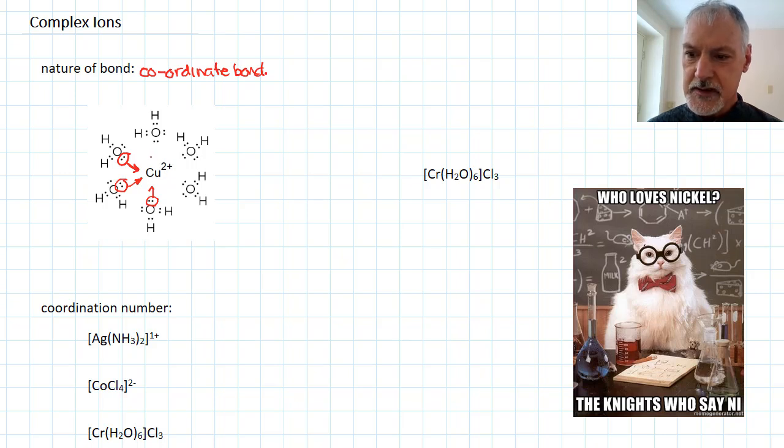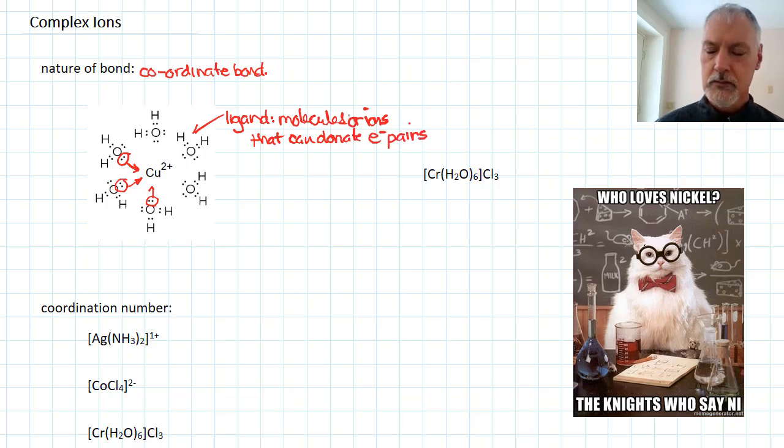These substances that attract themselves to these positively charged ions in the center, these are referred to as ligands. So in this case, my water molecule acts as a ligand. Ligands essentially are identified as molecules or ions that can donate pairs of electrons.